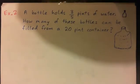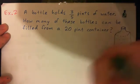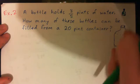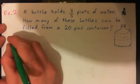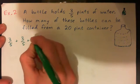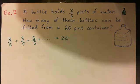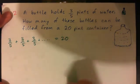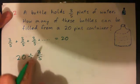Let's have a look at example 2. If a bottle holds 3 fifths pints of water, how many of these bottles can be filled from a 20-pint container? How many of these would be contained in this? If I add 3 fifths, how many of these do I need to add in order to get to 20? The question really is: how many 3 fifths are contained in 20? So it's like saying 20 divided by 3 fifths.